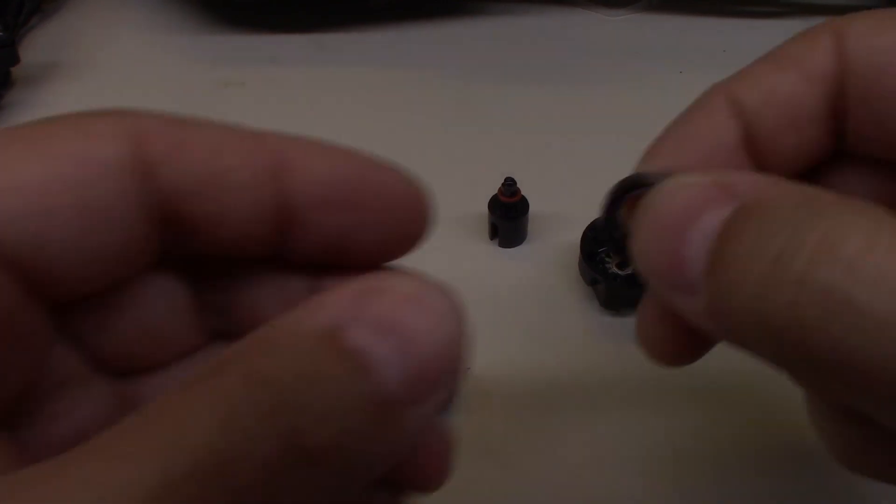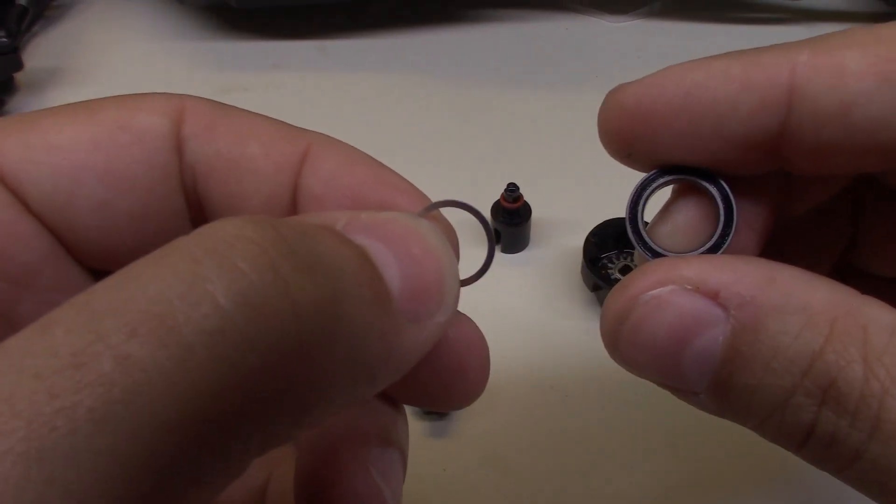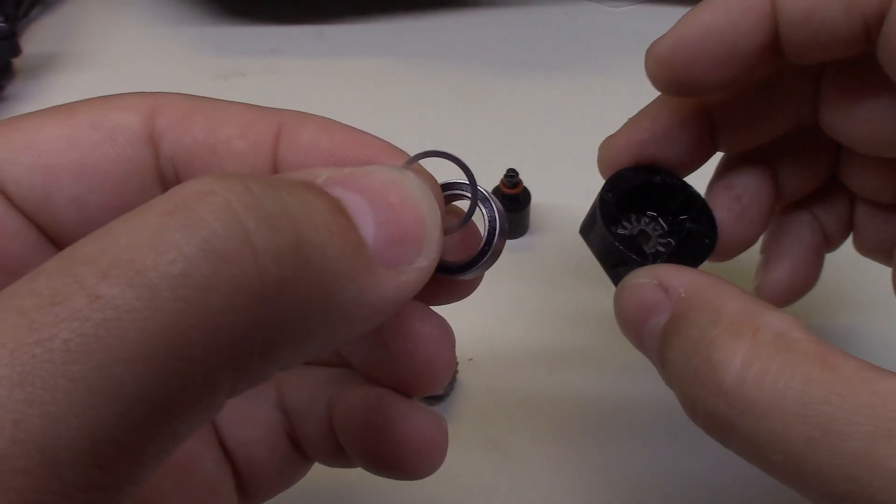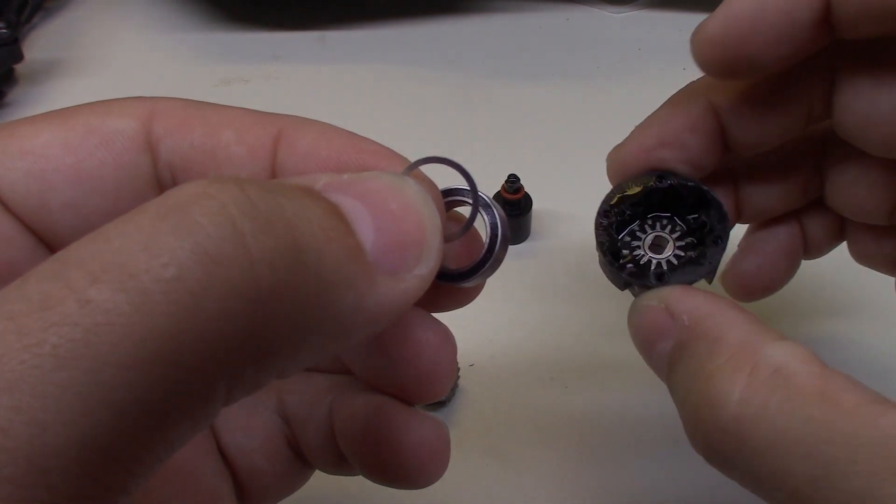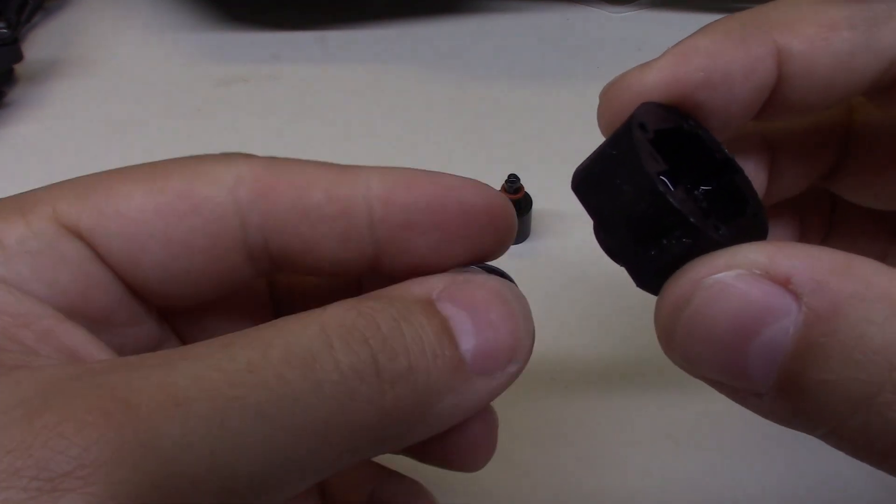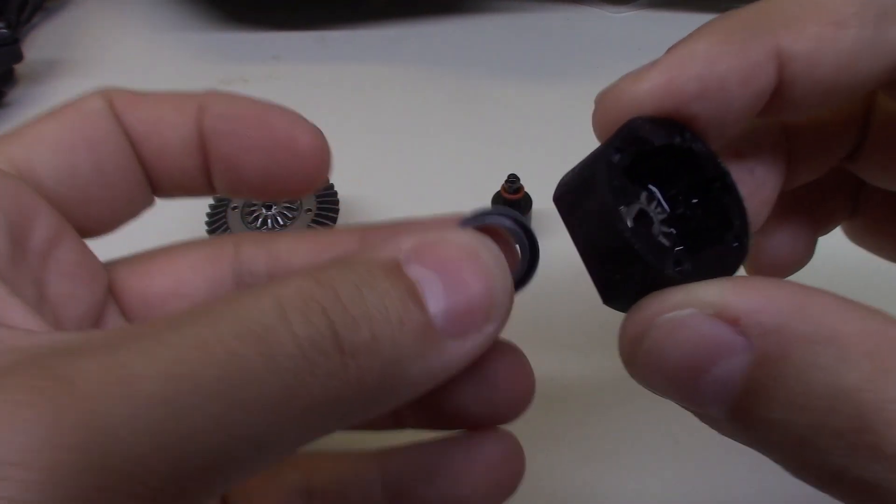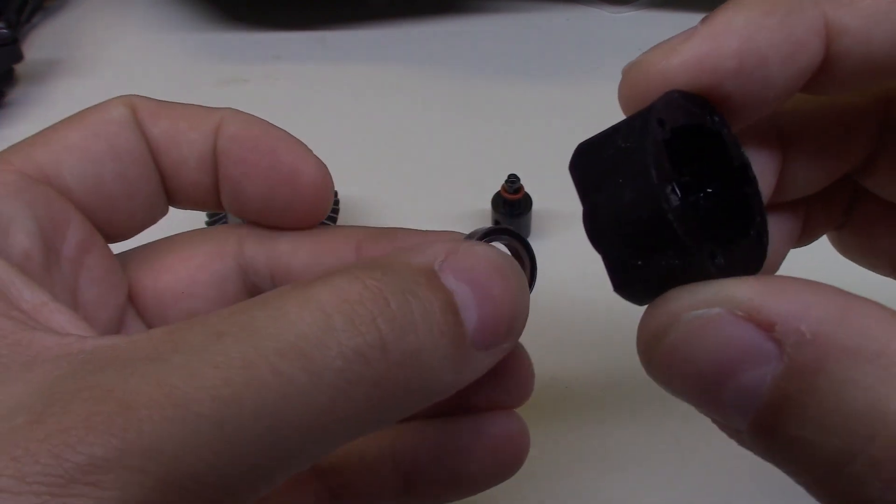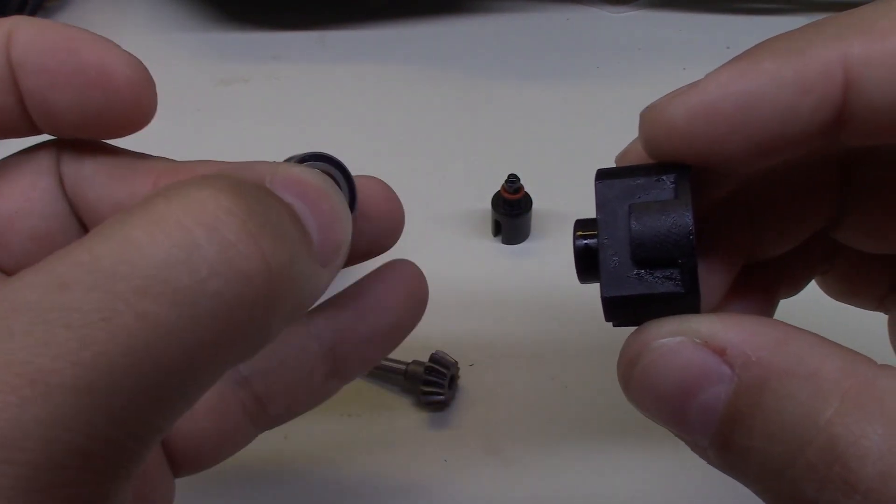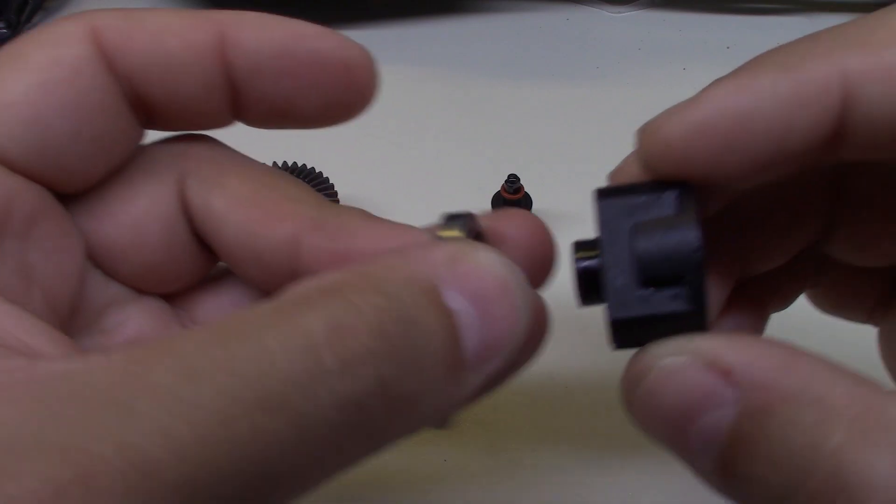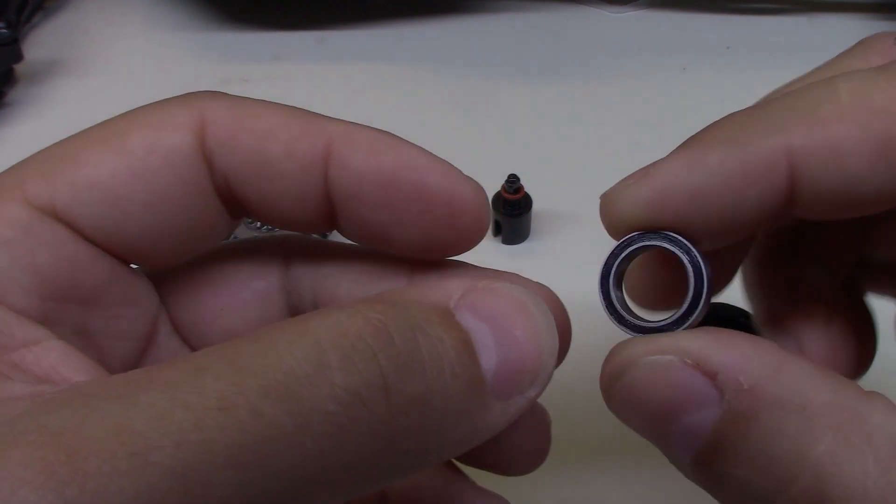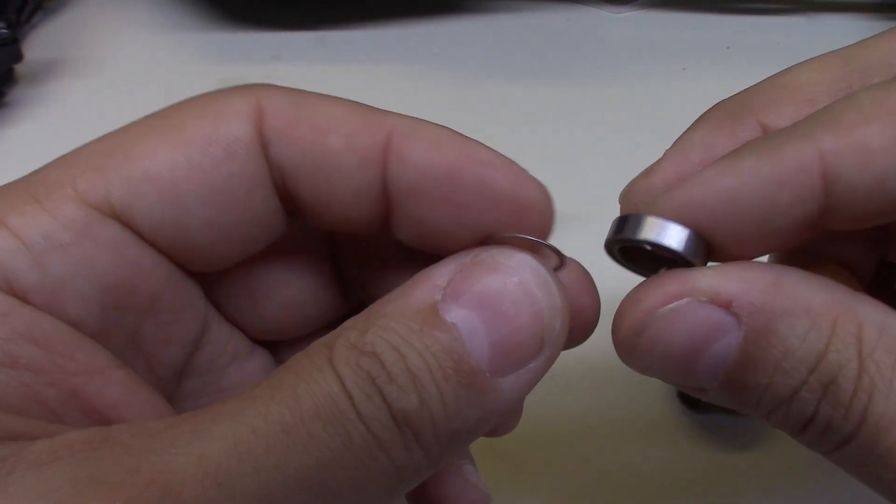I've got the differential apart, and here is the bearing that is going to be getting shimmed. If you're trying to loosen the mesh between the two gears, the pinion and the ring, you're going to want to put the shim between the bearing and the differential housing itself on the opposite side that the ring gear is, because you're wanting to push it away from the side that the ring gear is not on. So you'll put the shim between here and here, and then put everything back together. If you were trying to tighten it this way, you would put the shim under the opposite bearing.